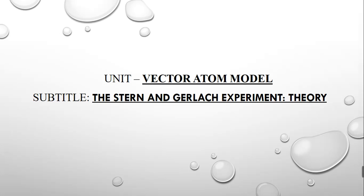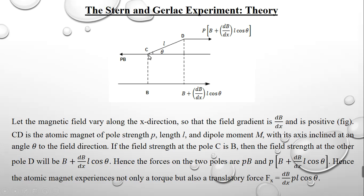Let me derive an expression for the amount of deviation produced in the presence of a non-uniform magnetic field by the magnetic dipole. For that, let me consider a small or tiny magnetic dipole. Let CD be the magnetic dipole of length L and pole strength P, which is inclined at an angle theta with the horizontal direction. This dipole is placed inclined to the horizontal direction in the non-uniform magnetic field, acting in a positive x direction.